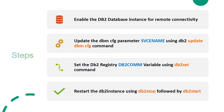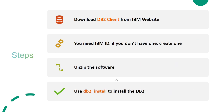To install the DB2 client, download it from the IBM website. You need an IBM ID — if you don't have one, create one using any email address. It is free of cost. IBM does not charge you to create an IBM account. Download the software, transfer it to the server, and unzip it.